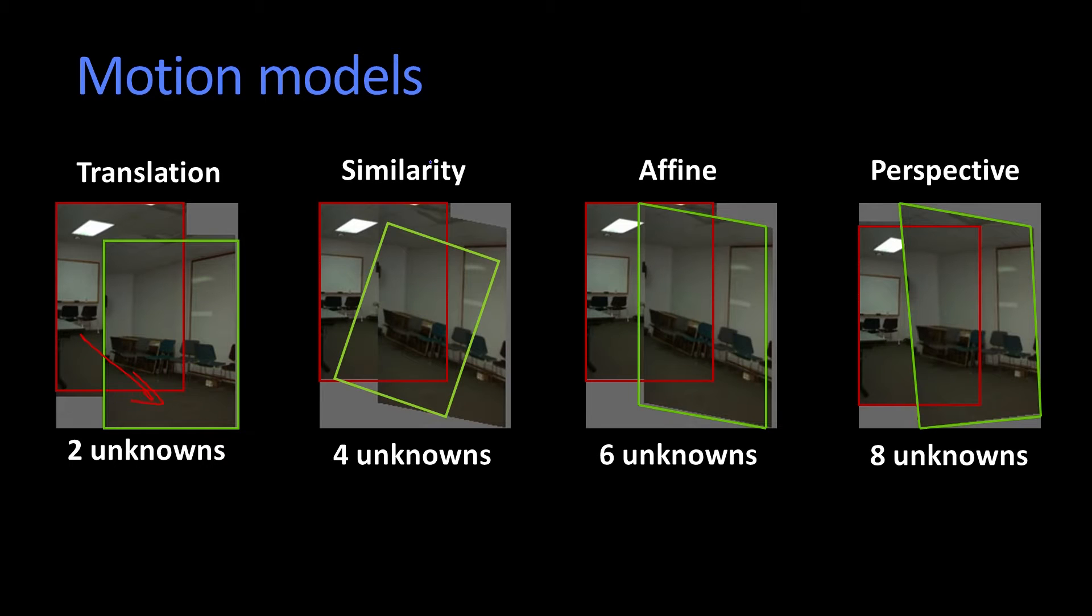We have what's called a similarity transform. Similarity is where things can translate, rotate, and scale. And that's four unknowns, two points.